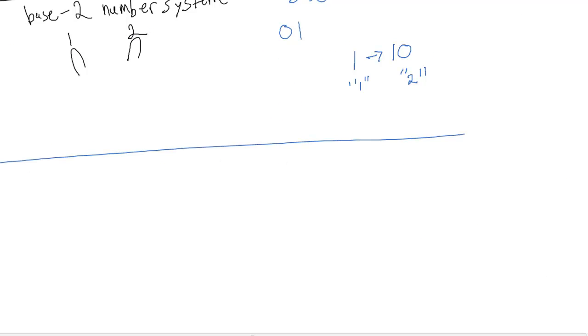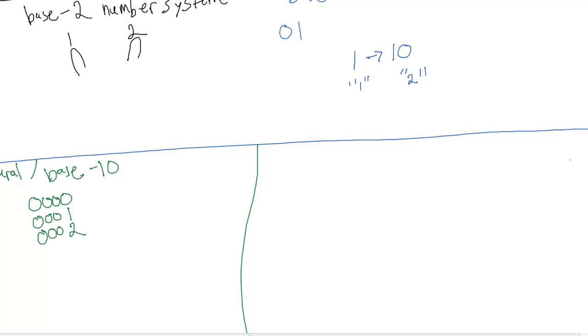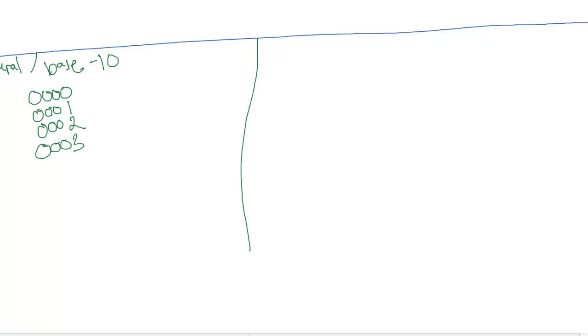Let's think back to first grade when you first learned to count numbers. Start out with natural or base-10, and let's count to ten. We'll start with 0000, 0001, 0002, 0003, 0004, 0005.